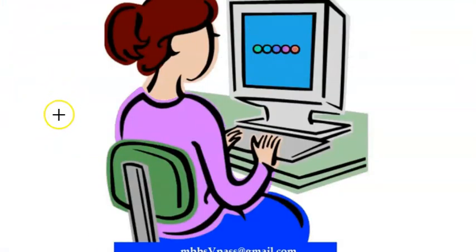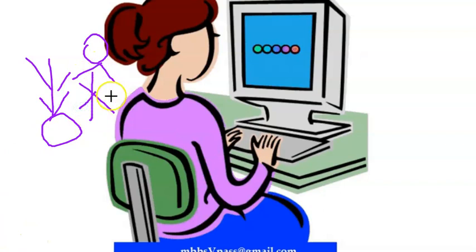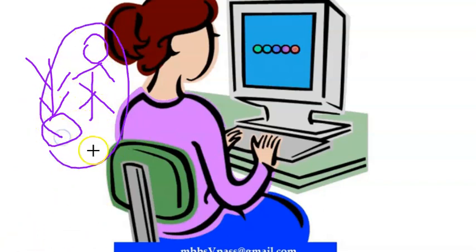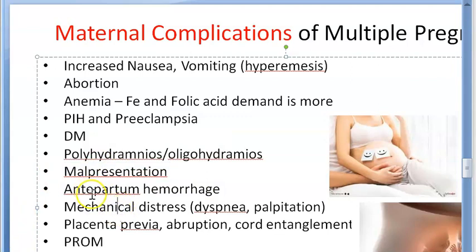What the textbook says is that the first baby usually will be a vertex presentation and the second one would be a malpresentation — not exactly breech, it could be any other. But they also note that these two babies can actually be quite small, and the malpresentation may not be that big an issue if the two babies are small.